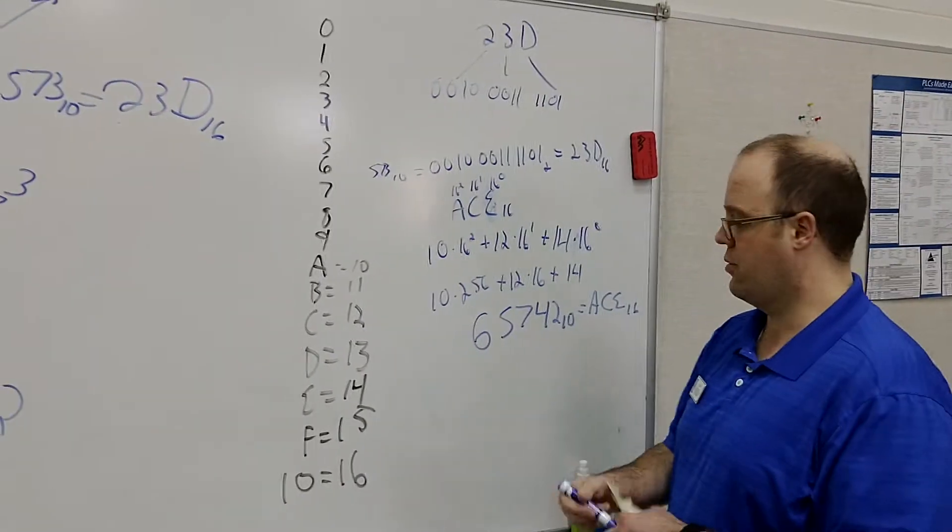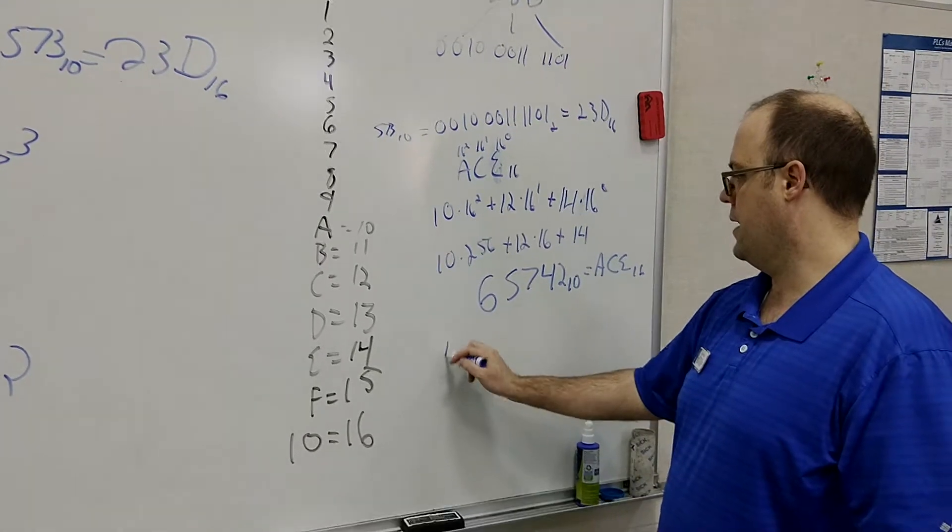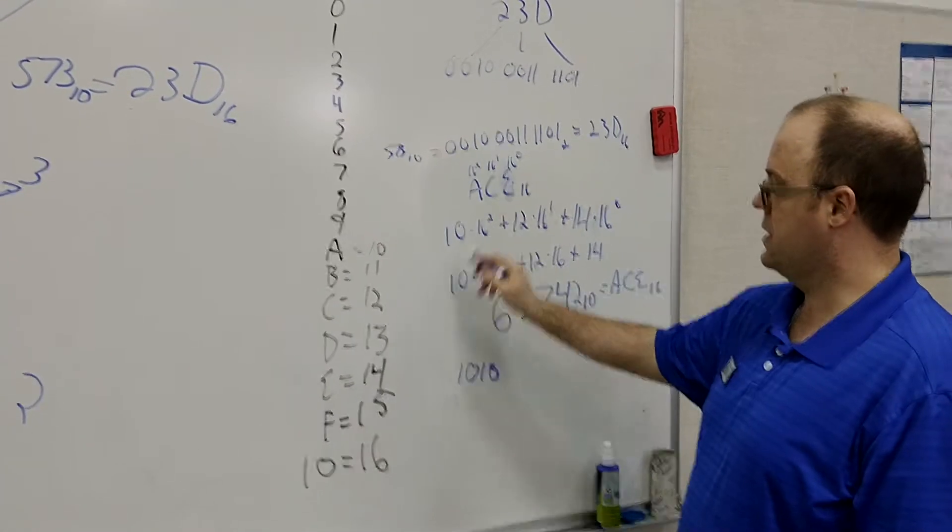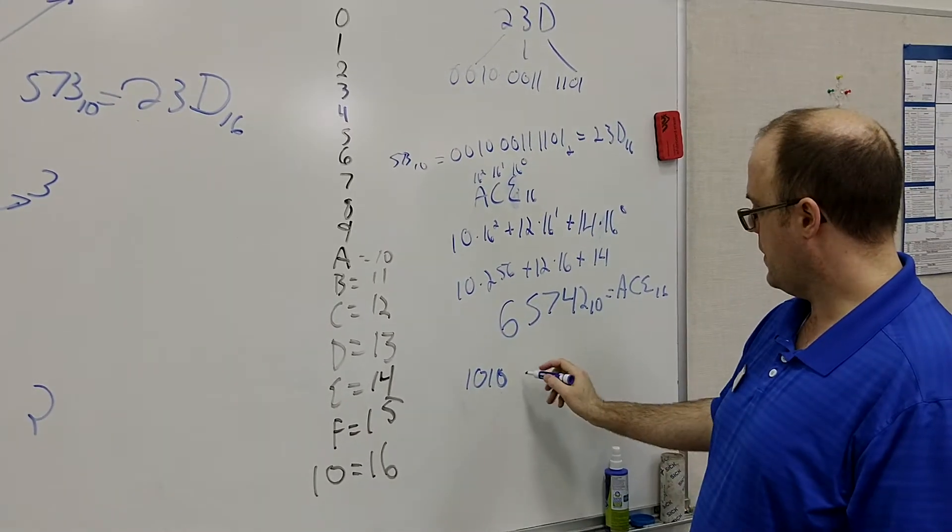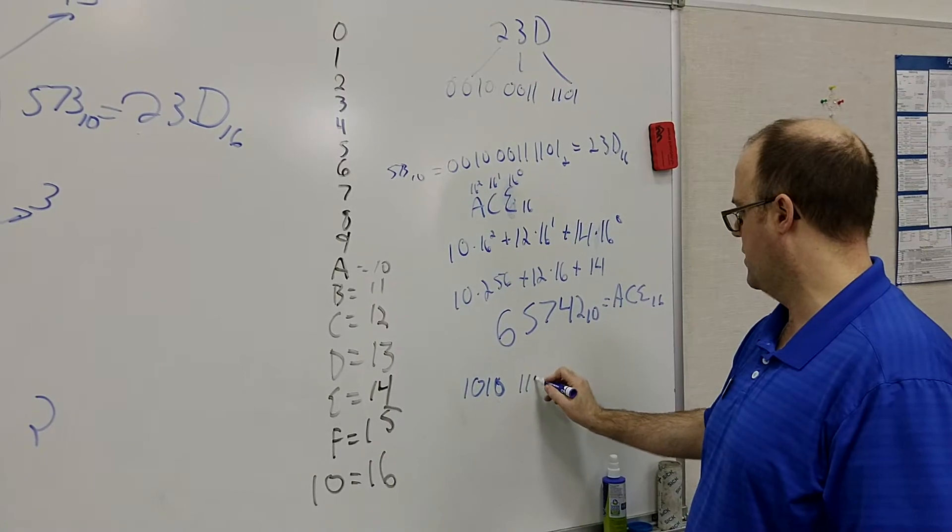So 10, the binary equivalent to 10 would be 8 and 2. So that's 10 right there. C is 12. 12, so 12 would be 8 and 4, so it would be 1, 1, 0, 0.